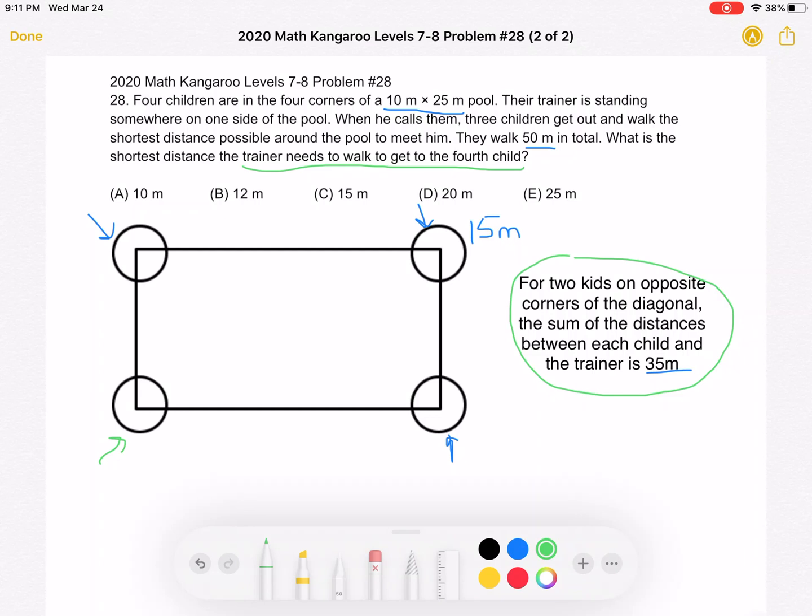Well, we know that the two kids opposite each other, the sum of the distances between each kid and the trainer is 35 meters. So the person opposite the fourth child is this child that walked 15 meters. But again, we still need that sum of 35. So 35 minus 15. The distance between this fourth child and the trainer must be 20 meters in order to keep that diagonal sum of 35 meters.